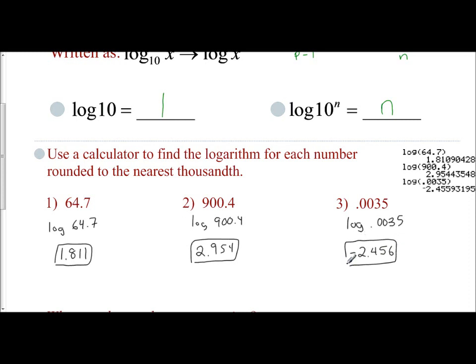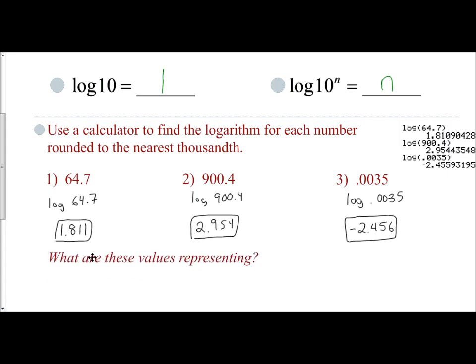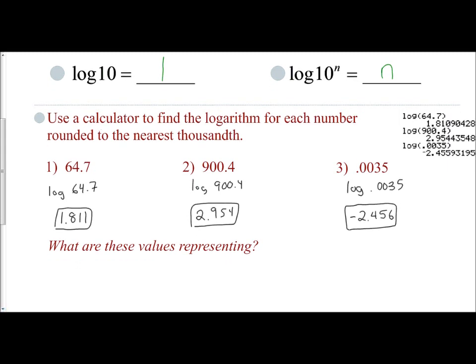So the question I'm asking now is what do these values represent? What does 1.811 mean if we take the log of 64.7? What does 2.954 mean? What they mean is you are actually finding the numbers written as 10 to a power.